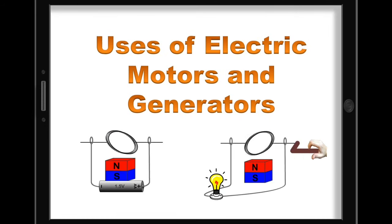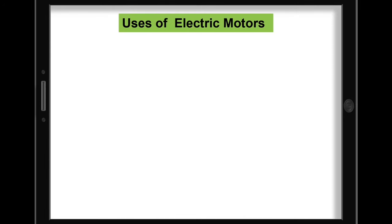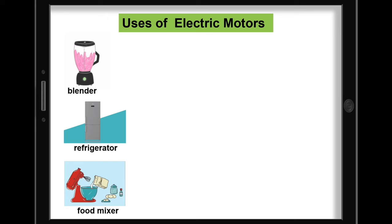Uses of electric motors and generators. Look around your house and you will find that it is filled with electric motors. Here's an interesting experiment for you to try: walk through your house and count all the motors you find. Starting in the kitchen, there are motors in the blender, the refrigerator, two or three in fact, one for the compressor, one for the fan inside the refrigerator, as well as one in the ice maker, or even your food mixer.